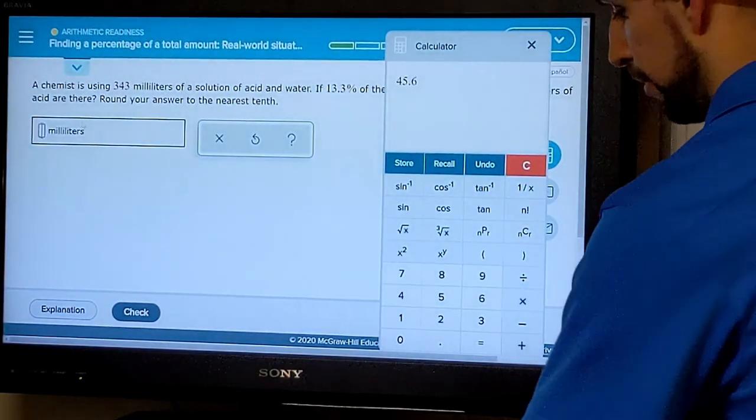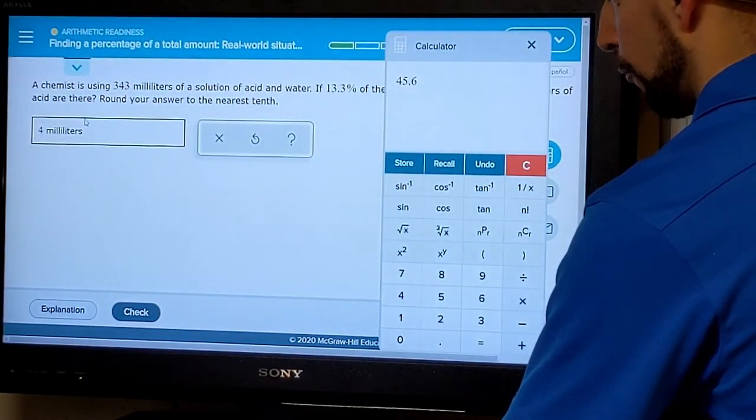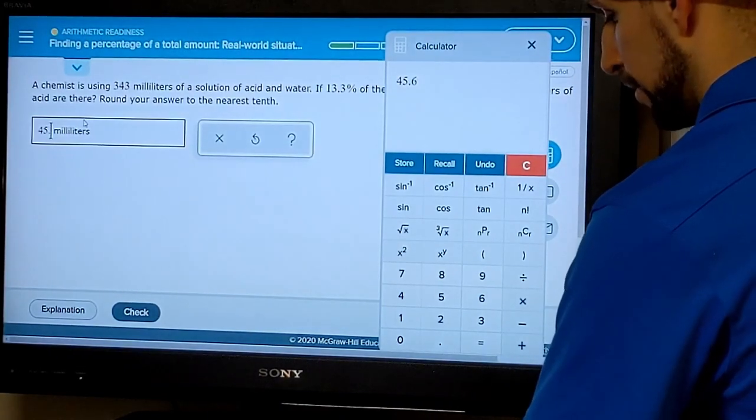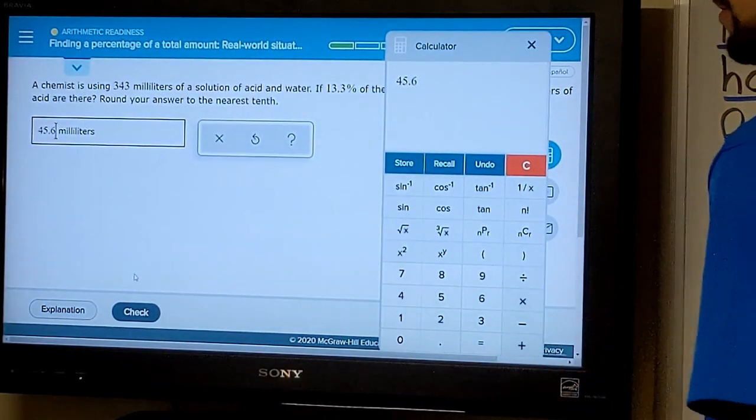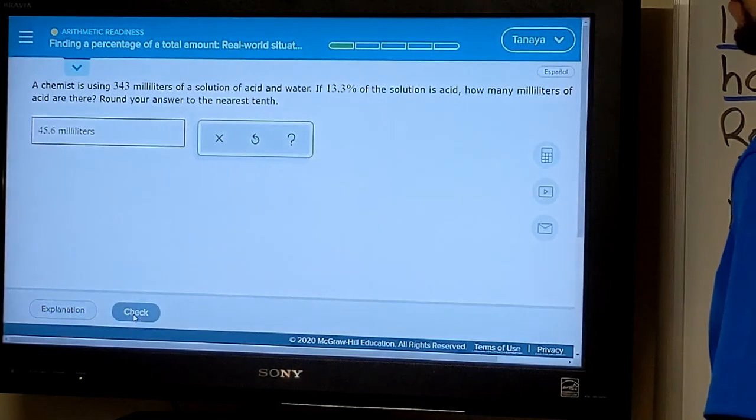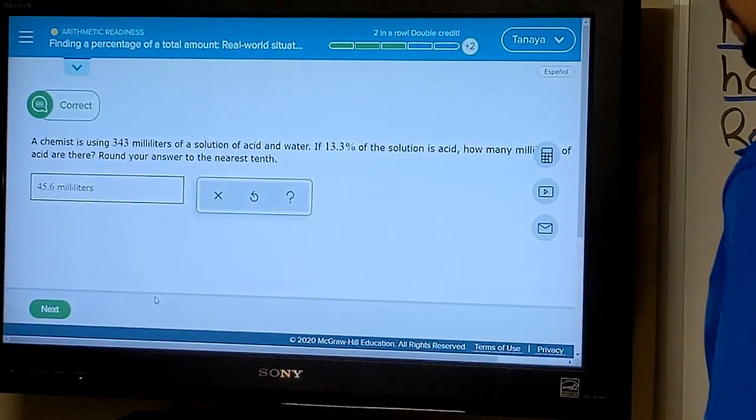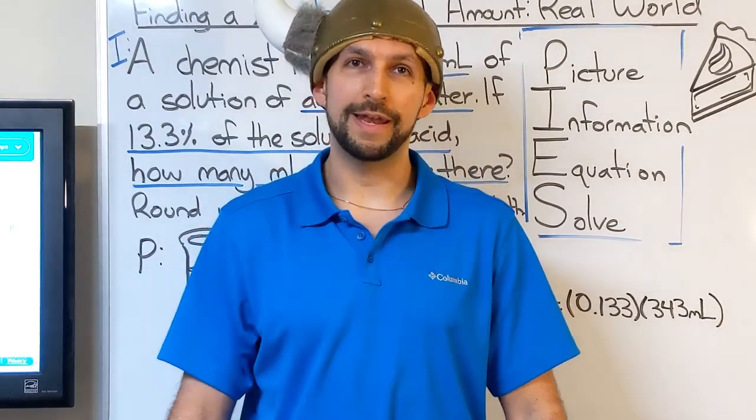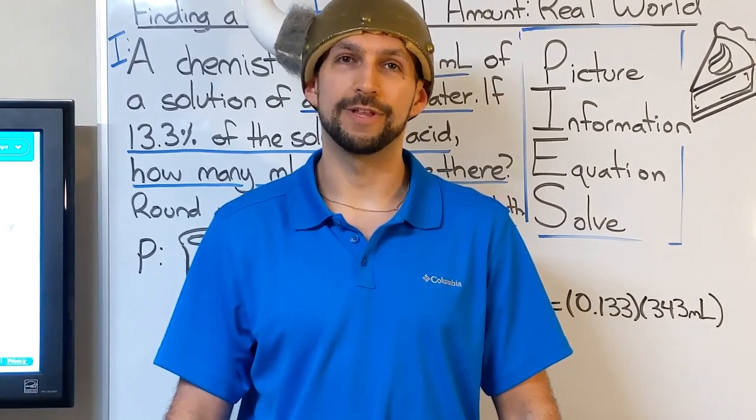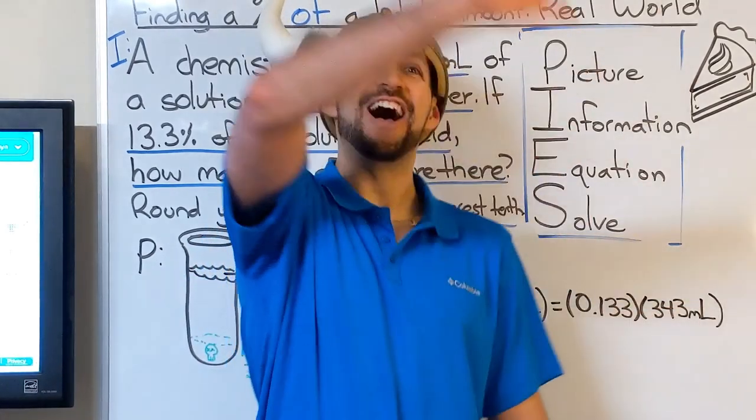We now have our solution rounded to the nearest tenth. We're going to enter that into our answer bank: 45.6 milliliters. Hopefully you found this useful and that now you're able to solve percentage problems on your own in ALEX. Have a great day everybody. Bye bye.